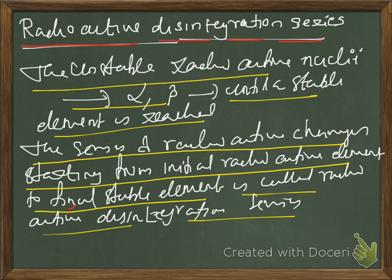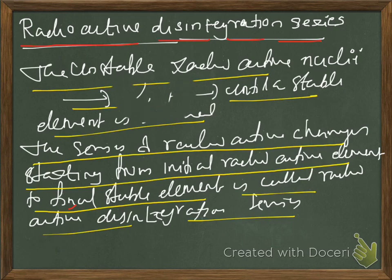That we have seen in one of the previous classes. When alpha is emitted, it goes two positions left in the periodic table, and by emitting beta particles, it can go one position right to the parent element in the periodic table. During such transition the element changes, and this process continues until it becomes a stable one — that means lead. The whole process collectively is called radioactive disintegration series. The unstable radioactive nuclei emit alpha and beta particles until a stable element is formed. The series of radioactive changes starting from the initial radioactive element to the final stable element is called radioactive disintegration series.